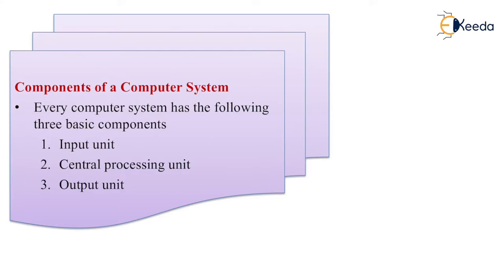Components of computer system. Every computer system has the following basic components. The first is input unit. Second is CPU that is central processing unit. And third is output unit.